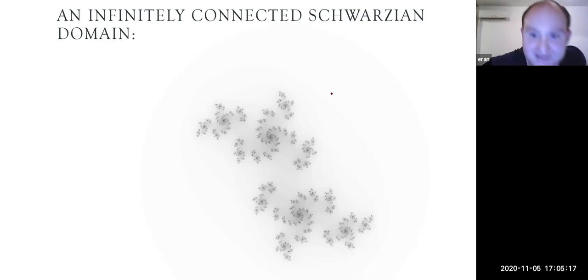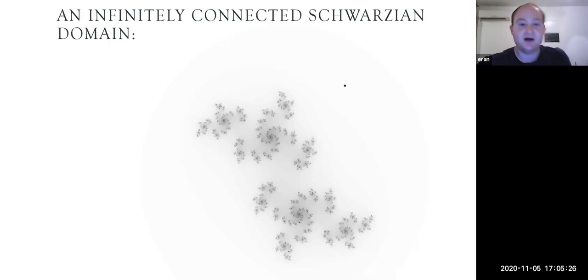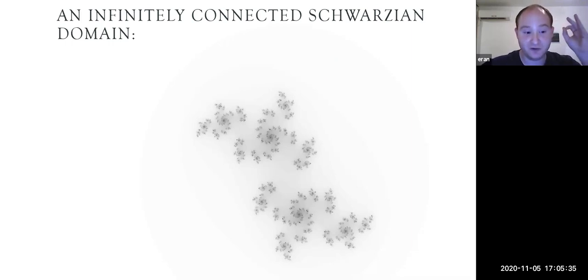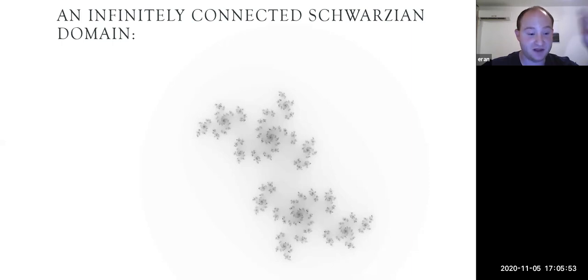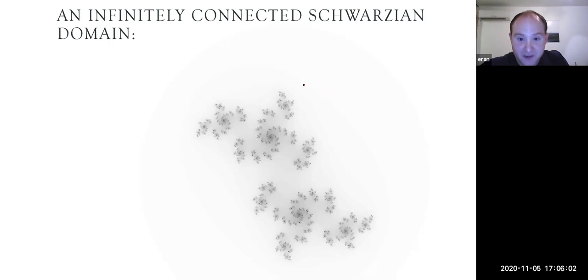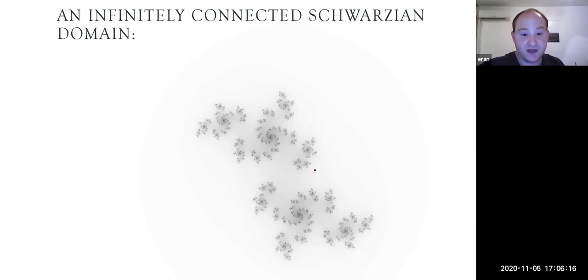Before moving on to the more dynamically oriented part of this talk, let us say a few words about the infinitely connected case. The last theorem is stated only for the finitely connected case, and it is worth asking whether it can be generalized to an infinitely connected setting. The answer is no — there are counterexamples. However, there are some infinitely connected Schwarzian domains: for example, a planar Cantor set punctured from the sphere gives a Schwarzian domain even though there is no quasi-circle on its boundary.